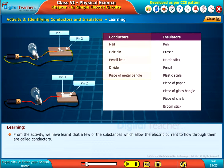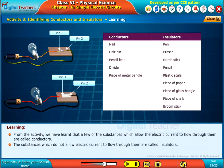From the activity, we have learned that substances which allow electric current to flow through them are called conductors. The substances which do not allow electric current to flow through them are called insulators.